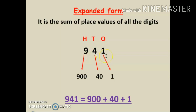The first rule says that whenever we are given any number, we have to write ones, tens, and hundreds on the top. We have to assign them their position — their places. We will start from the right-hand side and write ones, tens, hundreds on the top.